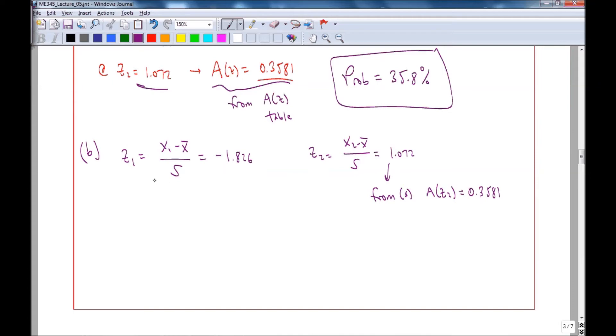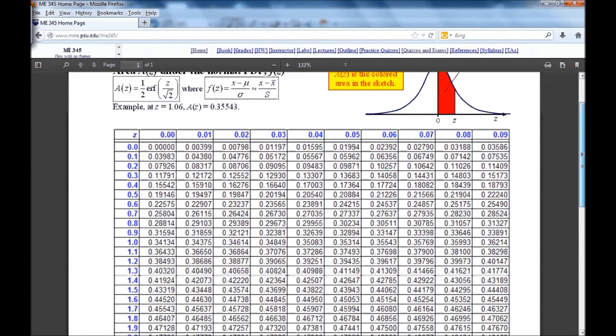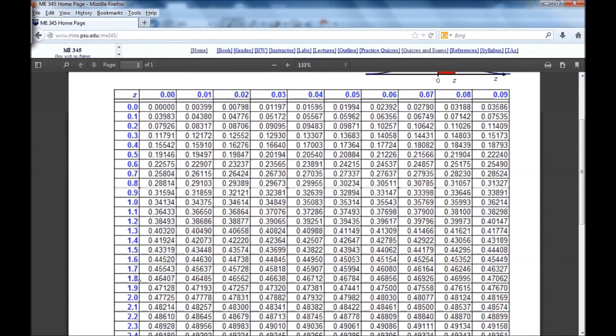And we have to calculate A of Z1. Well, we know that A of Z1 is A of negative Z1, since the Gaussian is symmetric. And at 1.826, notice when we go to our Gaussian table, we scroll down. Notice that these are all values for positive Z only. The negative Z values are the same areas because it's symmetric. So we go down to 1.826. So that would be this row in between these two values. And we get 0.4661 when we interpolate.